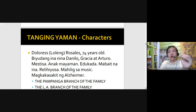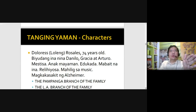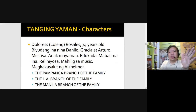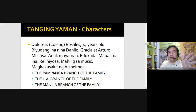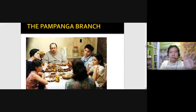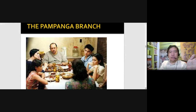So the Alzheimer's disease would be the barrier for the character to assign her Last Will and Testament. You have three branches of the family: the Pampanga branch headed by Danilo, played by the late Johnny Delgado; the LA branch with Dina Bonnevie's character Gracia, married to Joel Torre's character; and the Manila branch headed by Arturo, played by Edu Manzano. If we look at the Pampanga branch, this is where Dolores is living before she found out she has difficulty tasting food — which serves as the inciting incident.